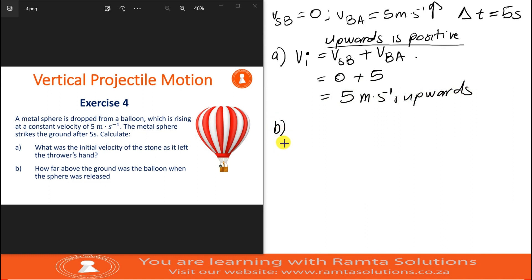Now, number B, they say how far above the ground was the balloon when the sphere was released. So we are basically looking for delta Y. We know what is our initial velocity, which we said was five meters per second upwards, and we know our delta T was five seconds.